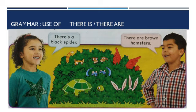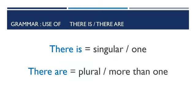So she says, 'There's a black spider.' The boy says, 'There are brown hamsters.' Look at the picture — how many hamsters are there? There are two hamsters, so he says, 'There are brown hamsters.' Now we know that 'there is' is used for any singular or any one thing, and 'there are' is used for plural or more than one thing.